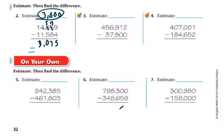Let's go ahead and do the math on this one. 2 minus 0 is 2. 1 minus 0 is 1. 9 minus 8 is 1. I can't take 7 from 6, so I regroup — this will be 16, taking the 10 from here, and this becomes 4. 16 minus 7 is 9. 4 minus 3 is 1. 4 minus nothing is 4. So my answer is 419,112.